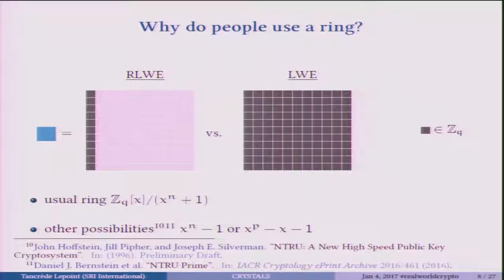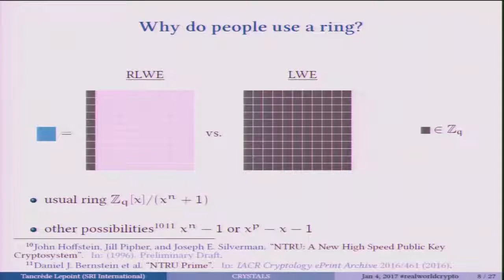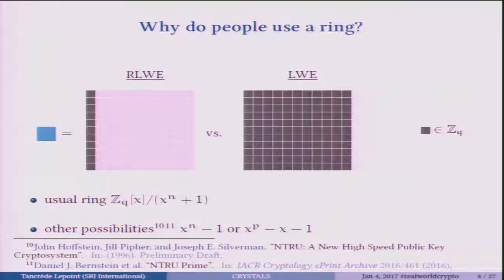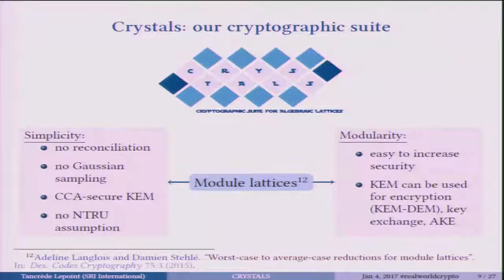There are some other possibilities, for example x^n minus 1 or x^p minus x minus 1. The second one gives a different algebraic object and you can get good performances, but implementing the multiplication is a little more complicated. So what is CRYSTALS? In CRYSTALS, we're considering module LWE — something that is more or less in between LWE and ring LWE.